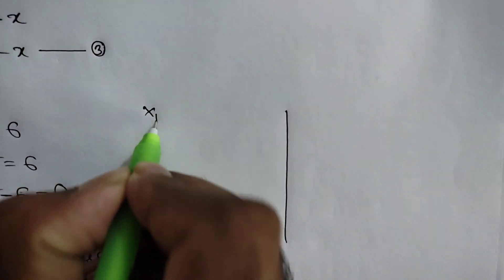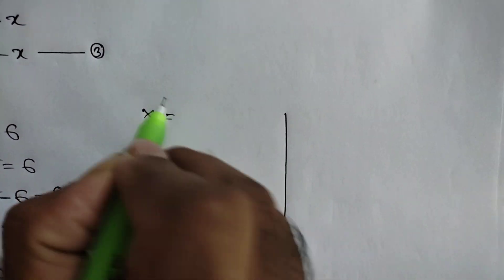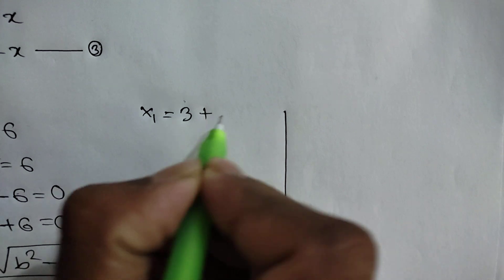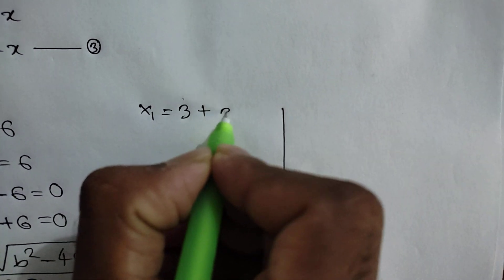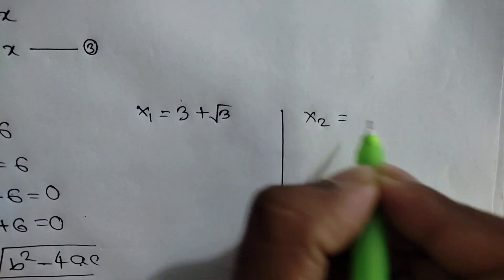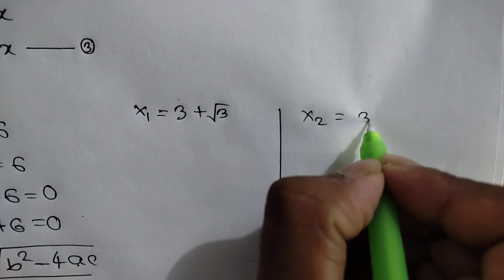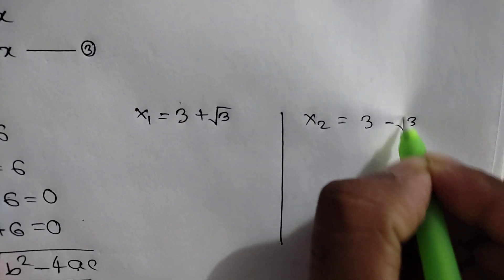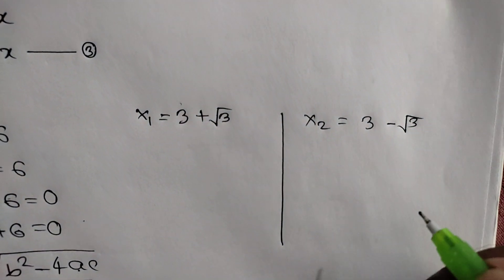We have two solutions: x1 is equal to 3 plus square root of 3, and x2 is equal to 3 minus square root of 3.